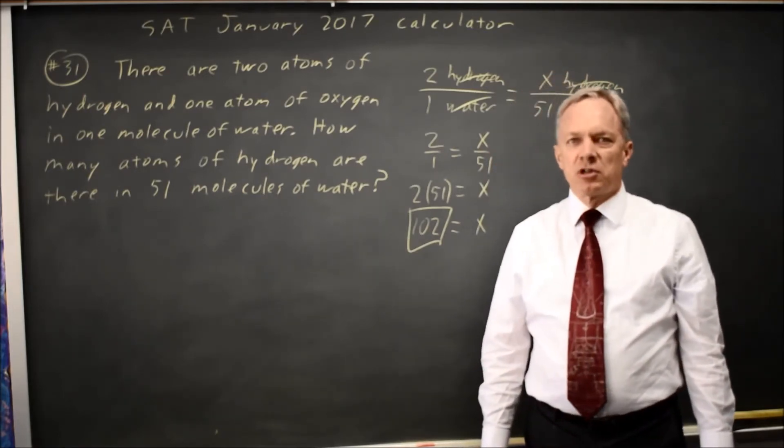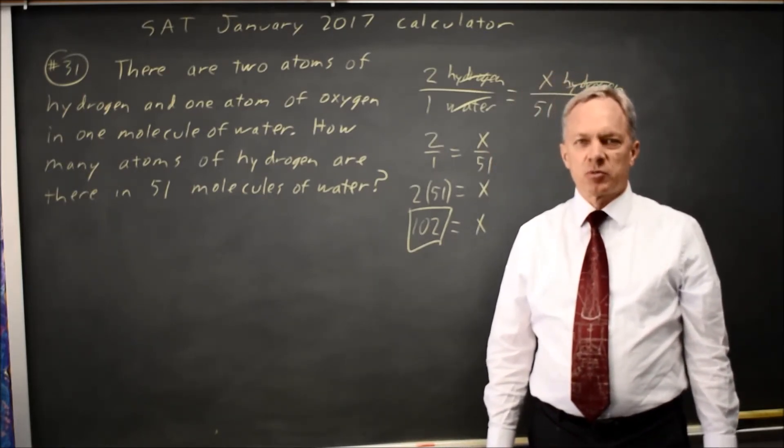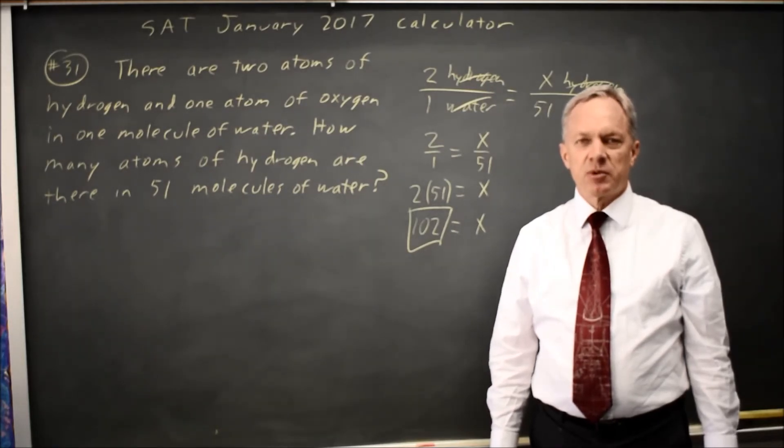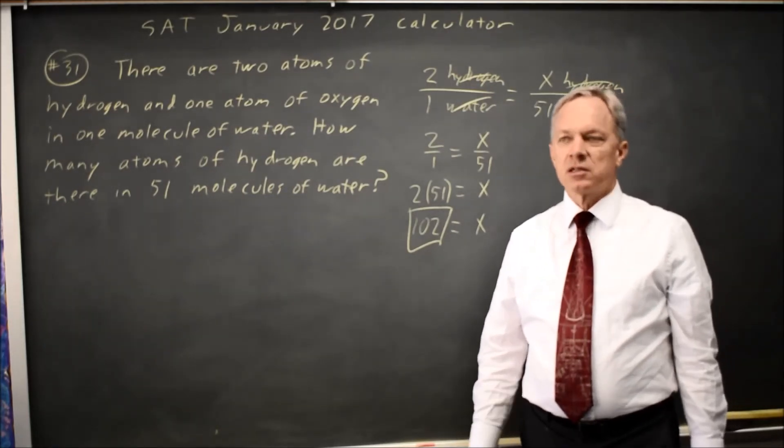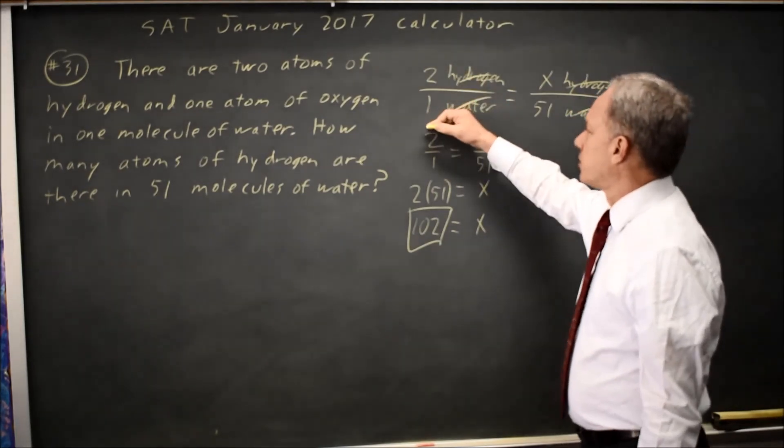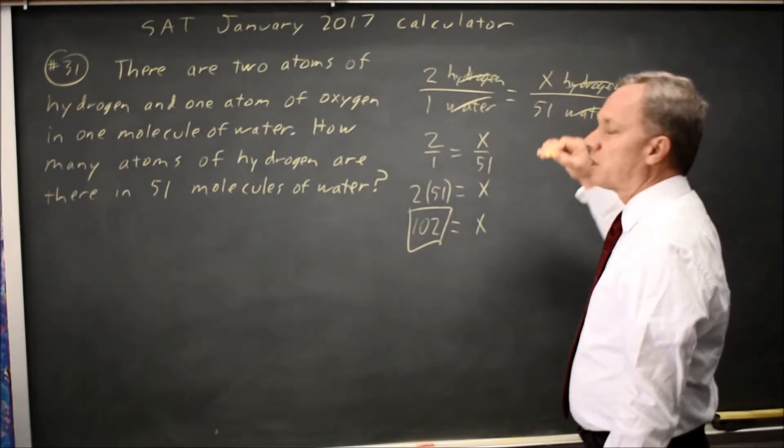The College Board always asks you questions on proportions. Make sure you set them up correctly without flipping your numbers. So I have hydrogen over water on the left, that means I want hydrogen over water on the right.